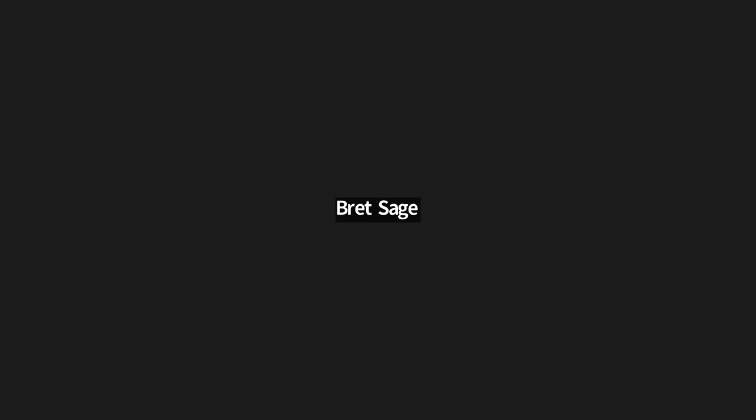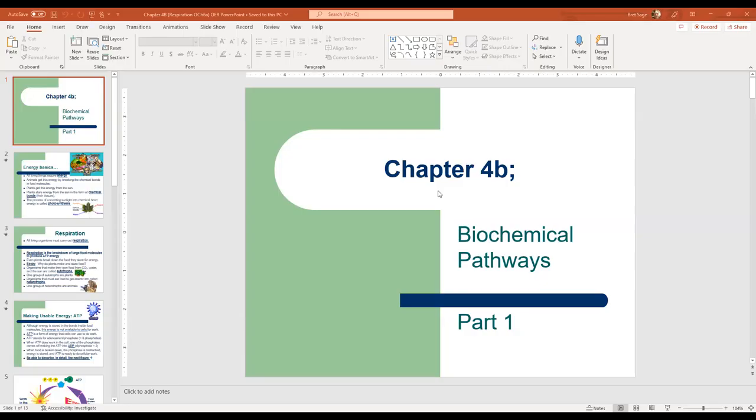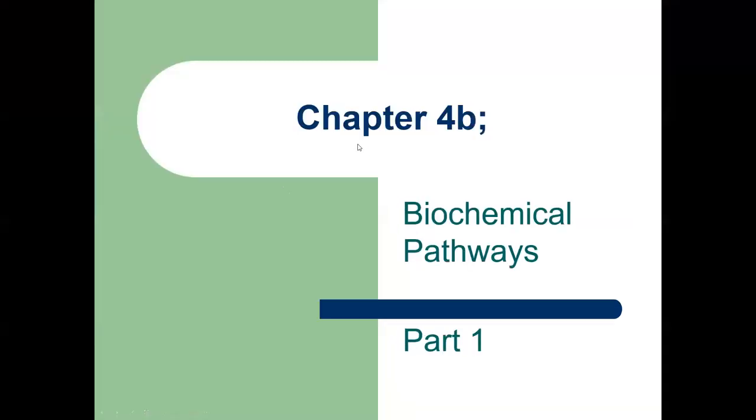We're going to start with chapter 4B — biochemical pathways, basically how ATP is made.